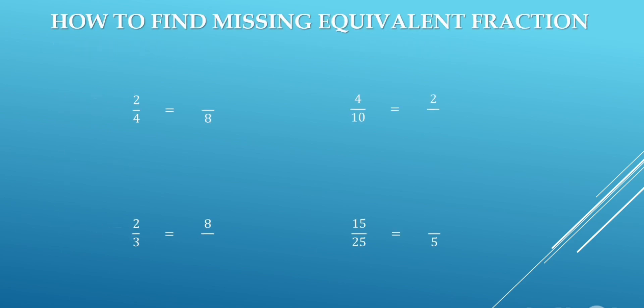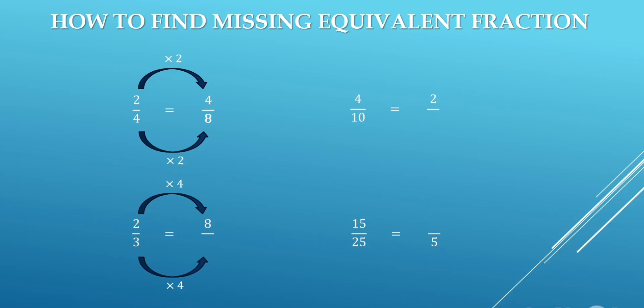Now we will learn how to find missing equivalent fractions. In the first question, in the denominator, 4 is multiplied by 2 and the answer is 8. Similarly, in the numerator, we will multiply 2 by 2, so the answer will be 4. In the second question, in the numerator, 2 is multiplied by 4, so the answer is 8. In similar way, in the denominator, we will multiply 3 by 4, so the answer will be 12.